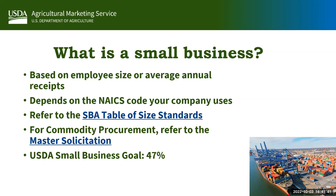To make sure each agency is effectively working with small businesses, the department has established business goals. Currently the USDA small business goal is 47 percent, meaning 47 percent of contracts should be awarded to small businesses. I'm happy to report that in fiscal year 2022, AMS not only achieved this goal — we surpassed it, awarding 49 percent of our contracts to small businesses.